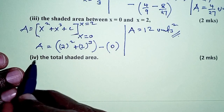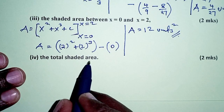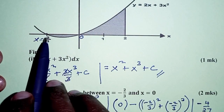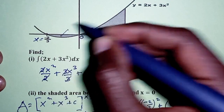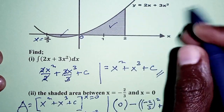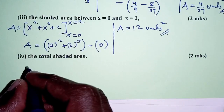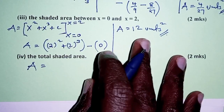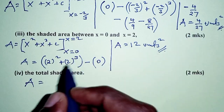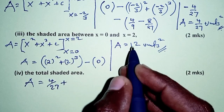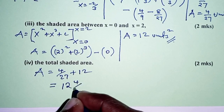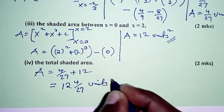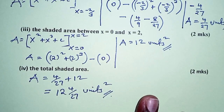Lastly, for part 4, we find the total shaded area by adding the two regions: 4/27 plus 12 equals 12 and 4/27 square units. That brings us to the end of this question. Thank you for watching — see you in the next one.